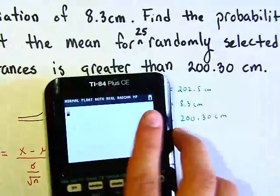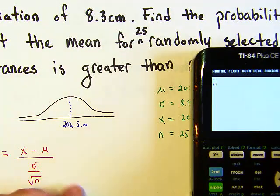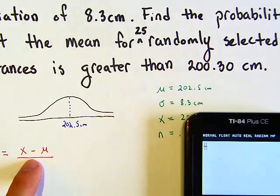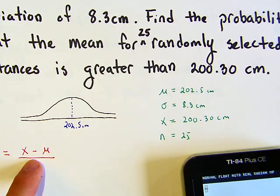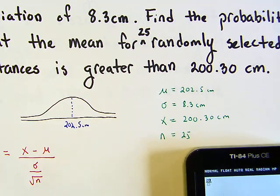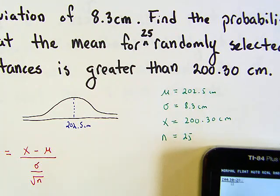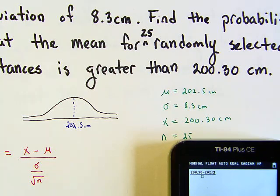What I want to do on the top is 200.30 minus 202.5, and on the bottom I want to put in another fraction.